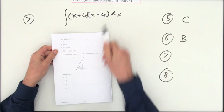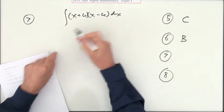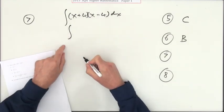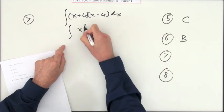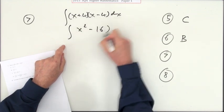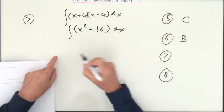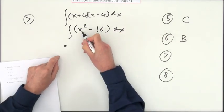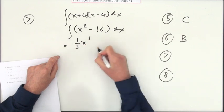Number seven. What's this integral then? Well you can't integrate it the way it is, don't try and do the bracket separately. I need to multiply it out. Look at the difference of two squares. That's x squared minus 4 squared, that's x squared minus 16.